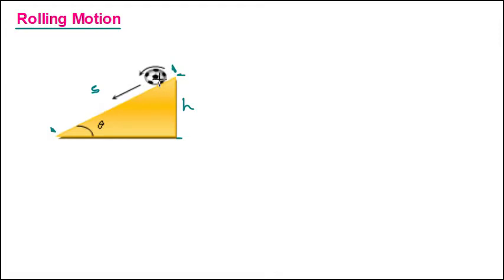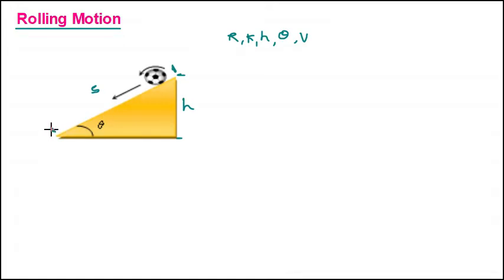If we release any object from this point — it may be a solid sphere, hollow sphere, ring, disc, solid cylinder, or hollow cylinder — if we consider the radius of gyration k and the height H, and theta is the angle of inclination, then V is the final velocity when that object reaches the bottom. The initial velocity is zero. During that time, acceleration is A.